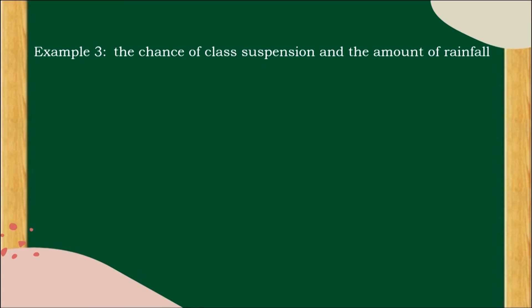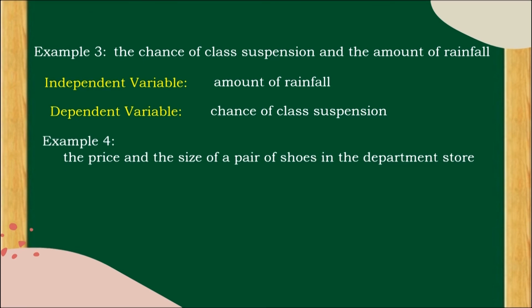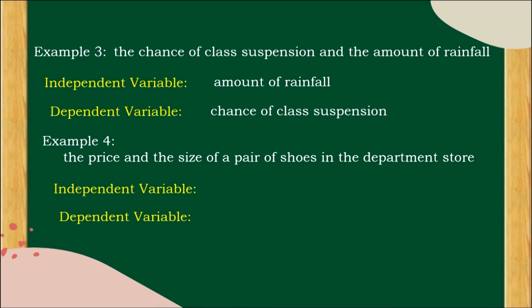Example 3: the chance of class suspension and the amount of rainfall. The independent variable is the amount of rainfall and the dependent variable is the chance of class suspension, because the chance of class suspension depends on the amount of rainfall. Example 4: the price and the size of a pair of shoes in a department store. The independent variable is the size of a pair of shoes and the dependent variable is the price of the shoes, because the price depends on the size.